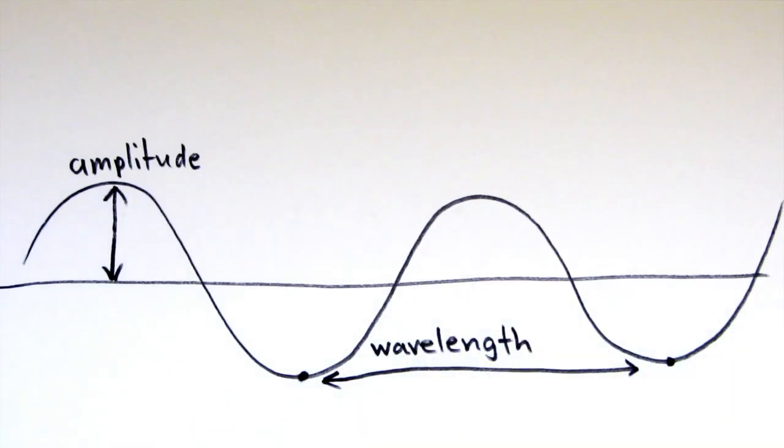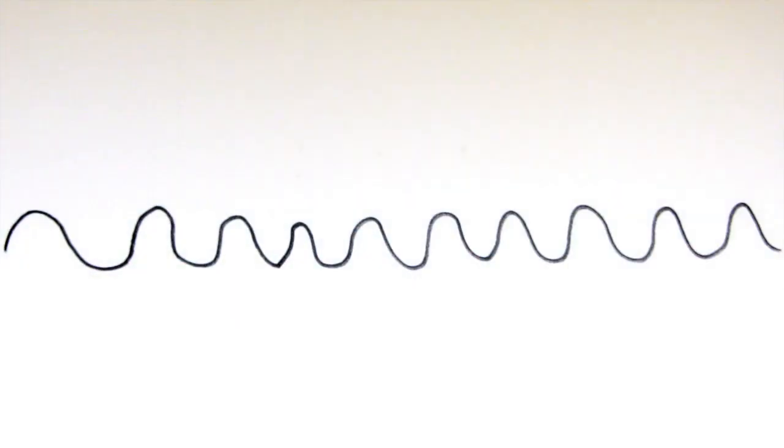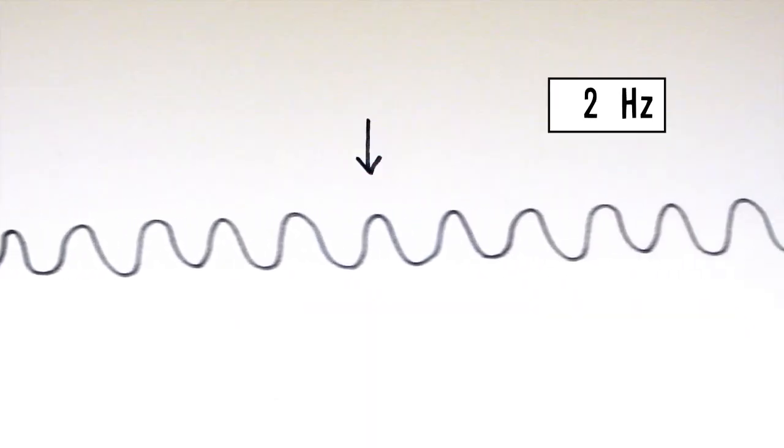The wavelength of a wave is the distance between a point on one wave and the same point on another wave. And the frequency is the number of waves that pass a certain point each second.